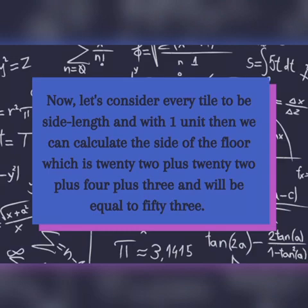As the blue colored tiles are diagonal patterned, each of them is situated diagonally, vertically above the other. Now let's consider every tile to be side length with 1 unit. Then we can calculate the side of the floor, which is 22 plus 22 plus 4 plus 3, and will be equal to 53.